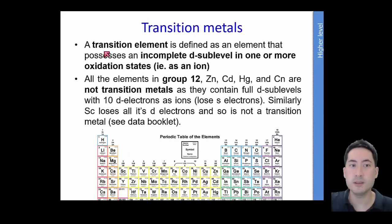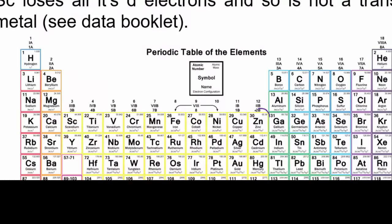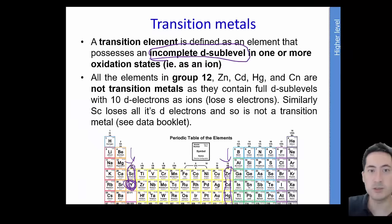First of all, a transition element is strictly defined as an incomplete D-sub level. Because zinc, cadmium, mercury, and copernicum have completely full D-shells, they are not considered transition metals. Similarly, when these lose an electron, they don't have any D-sub levels at all, making them not transition metals as well. IB loves to trick you on these, so I would extremely highlight those as not transition metals, even though they're yellow here and yellow represents a transition metal.